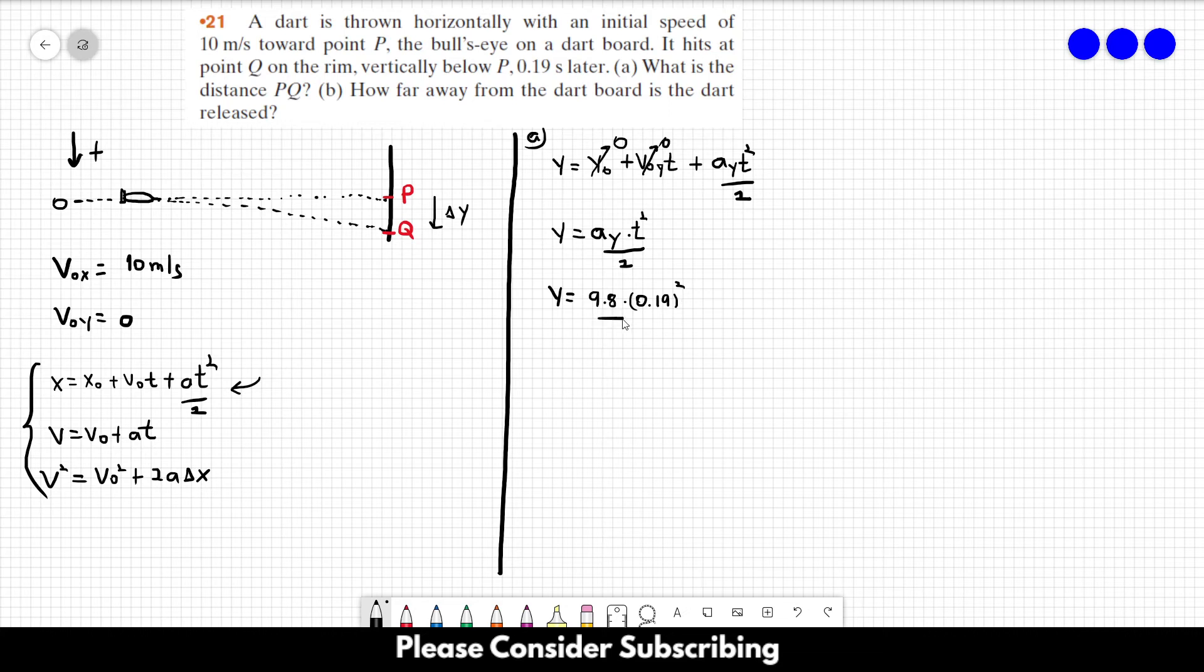And this is squared over 2. So if you do this calculation, you would find roughly, let's see, roughly 0.18 meters or 18 centimeters. This is the answer of letter A. Delta y is equal to 0.18 meters. Letter B.